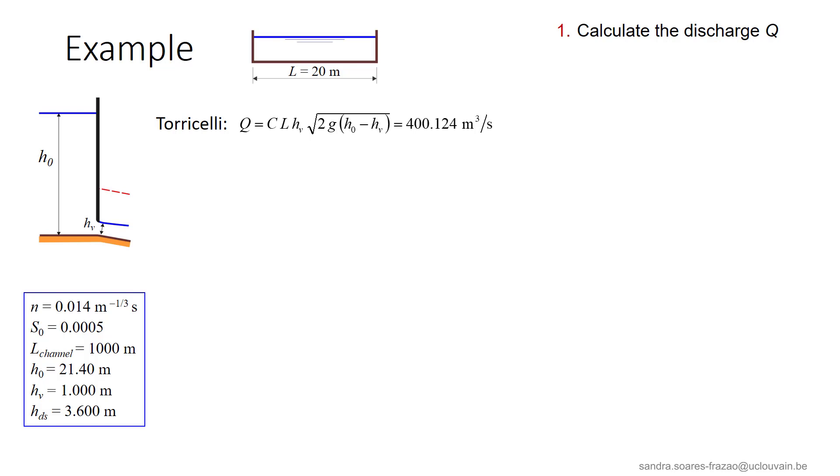The first step of the procedure is to calculate the discharge. This is done by applying Torricelli's formula, recalled here, where c is a discharge coefficient, so this c here, that accounts for the local contraction of the flow below the gate. For a well-designed gate, c can be considered equal to 1, which will be the case here. So we find a discharge of about 400 cubic meters per second.